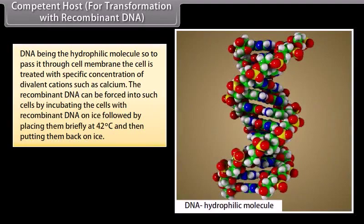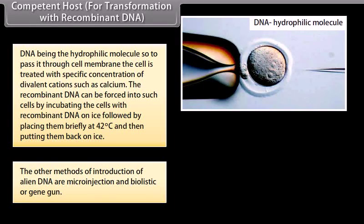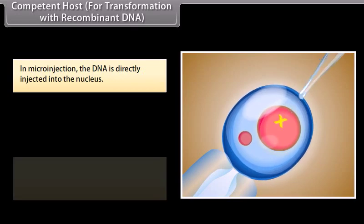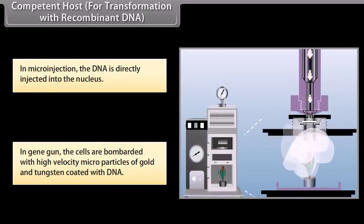Competent host for transformation with recombinant DNA. DNA being a hydrophilic molecule, to pass it through the cell membrane the cell is treated with a specific concentration of divalent cations such as calcium. The recombinant DNA can be forced into such cells by incubating the cells with recombinant DNA on ice, followed by placing them briefly at 42°C and then putting them back on ice. Other methods of introduction of alien DNA are micro-injection and biolistics or gene gun. In micro-injection, the DNA is directly injected into the nucleus; in gene gun, cells are bombarded with high-velocity microparticles of gold and tungsten coated with DNA.